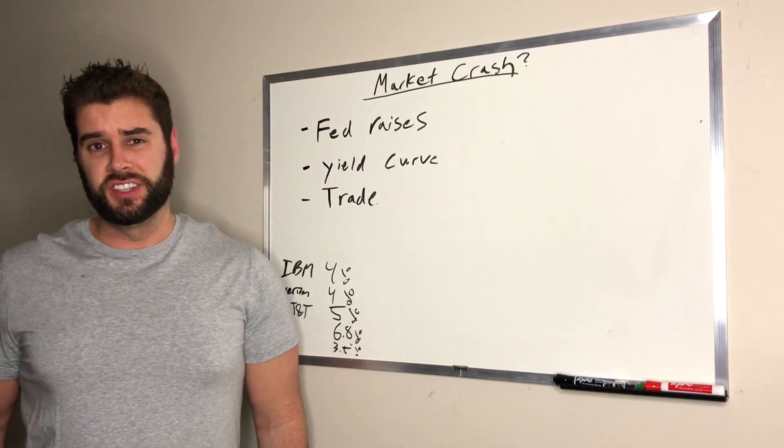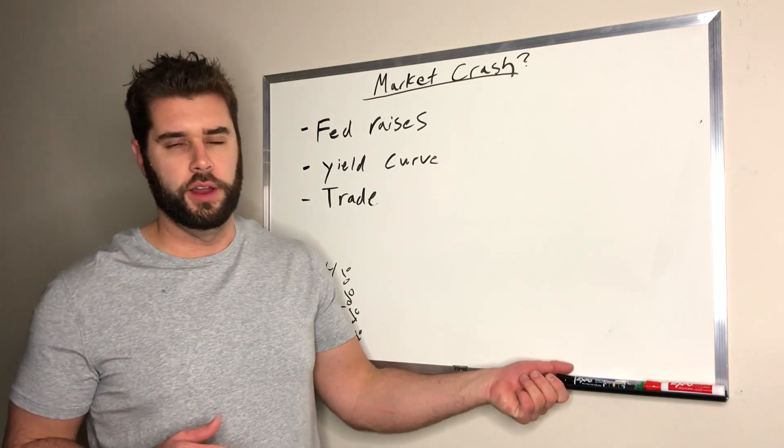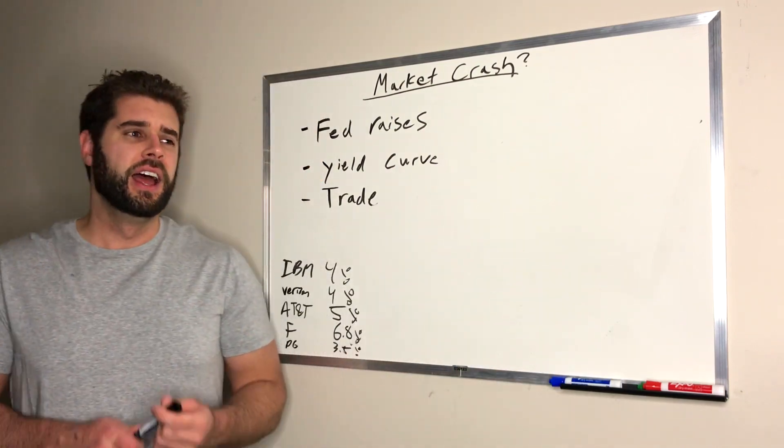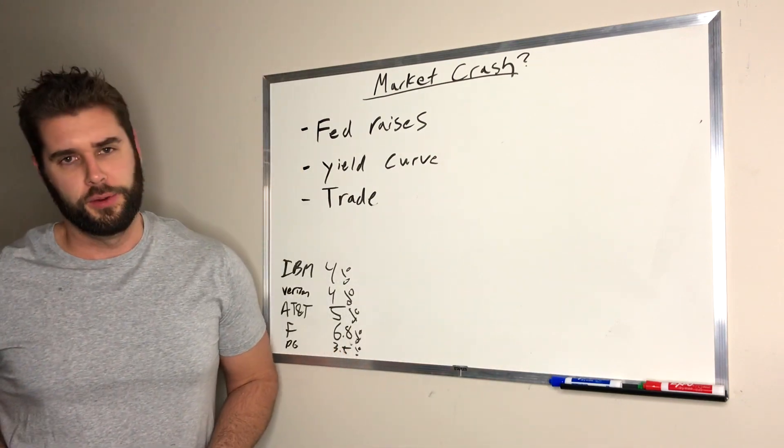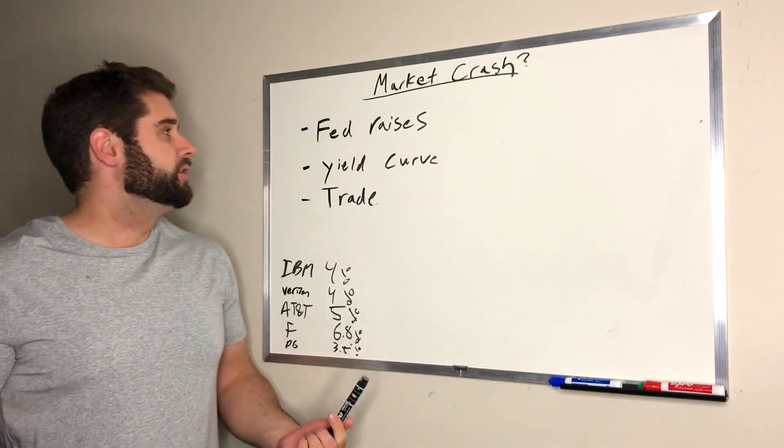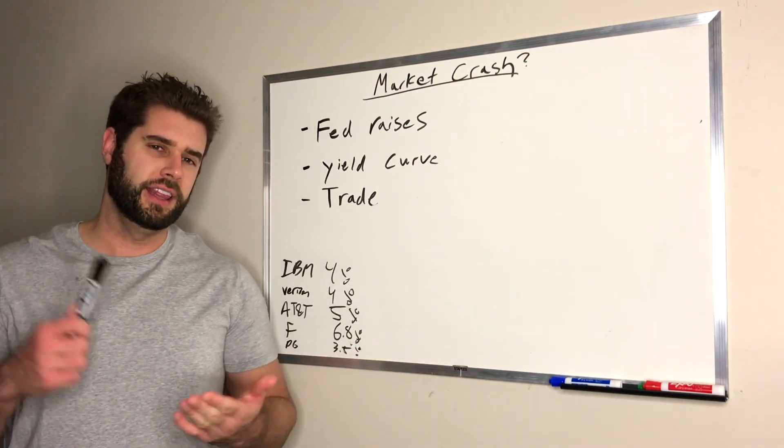We saw the Dow Jones, it was down over 800 and some points. We saw some other indices just get crushed as well. So I thought this was a good time to examine what's going on, like what's happening in the market? What are the reasons behind this? We can explain some of them. You can never fully explain what's going on in the stock market, of course, right? It's all up to interpretation.